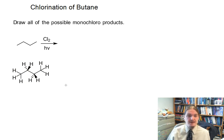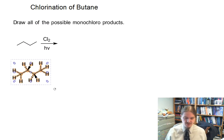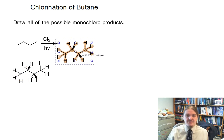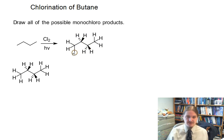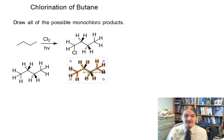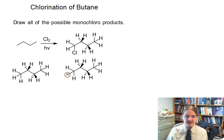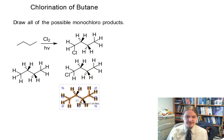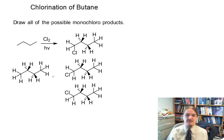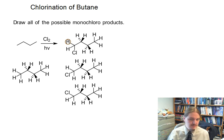As far as determining all of the possible monochloroal products, you could systematically go through and swap out any one of these hydrogens for chlorine. I have gone through and swapped out each of these three hydrogens on the end of this chain with a chlorine.